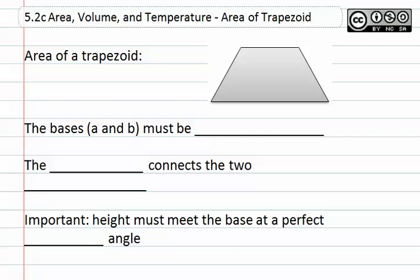The area of the trapezoid can be found by the formula area equals one-half the height times a plus b. a and b are the bases, and these bases must be parallel.